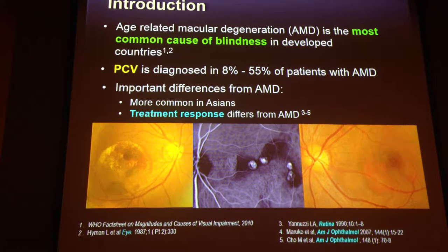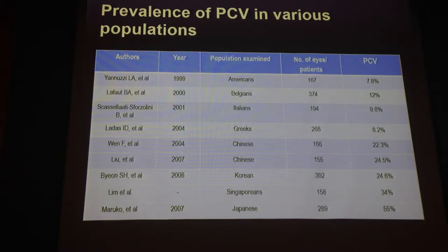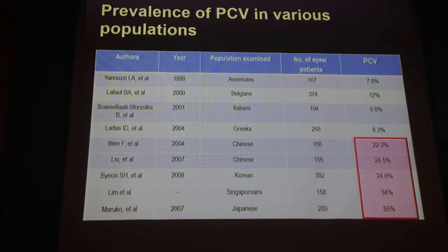The treatment response is different from typical AMD. For example, we know from the Everest study that combination therapy with photodynamic therapy as well as anti-VEGF factors has better outcomes — quite different from AMD where we just treat with monotherapy. In the West, prevalence ranges from 8% to at most 12%, whereas in Asian populations the rate varies from 22% to even 55% in the Japanese population. This is important and common amongst us here in Asia.